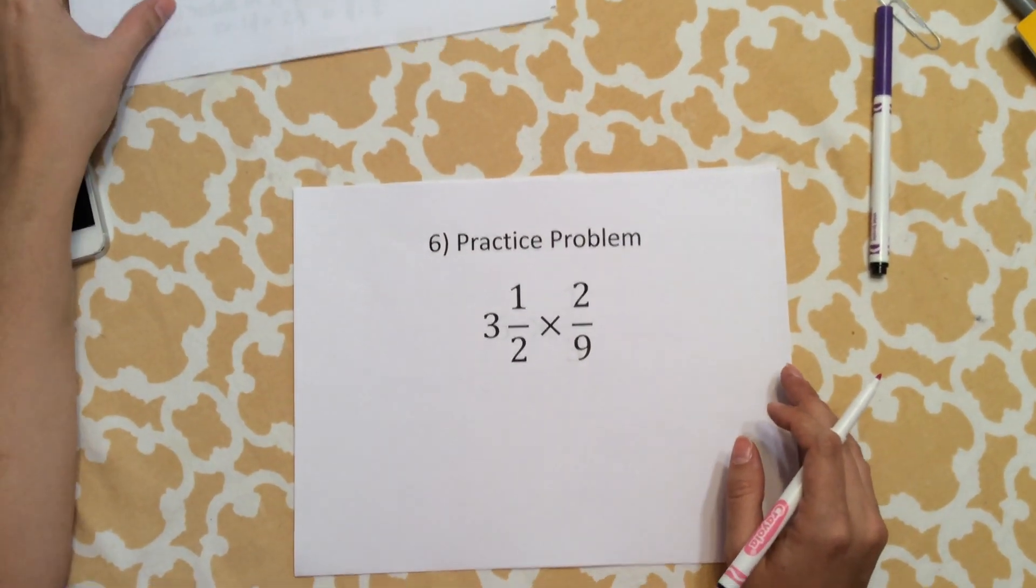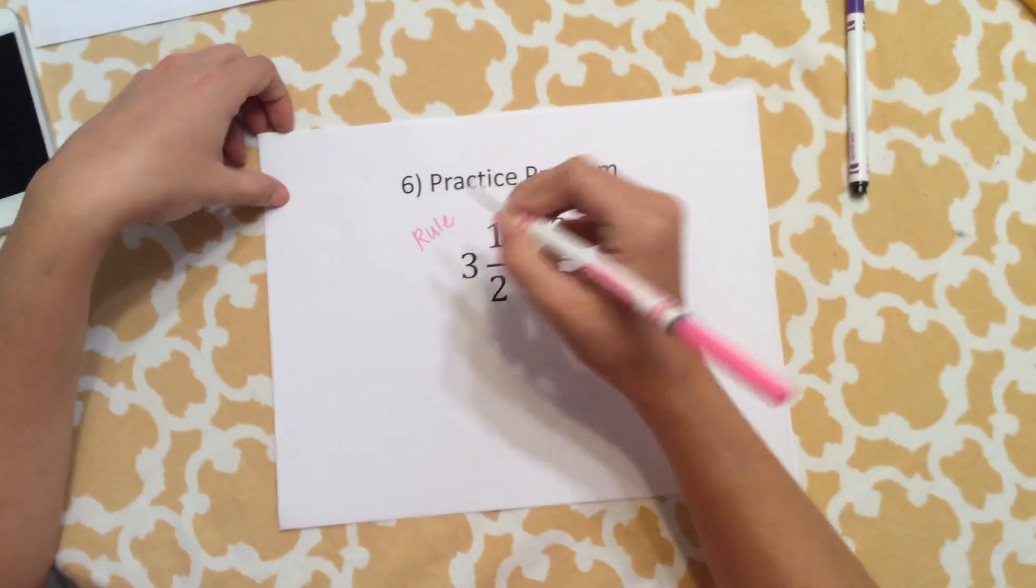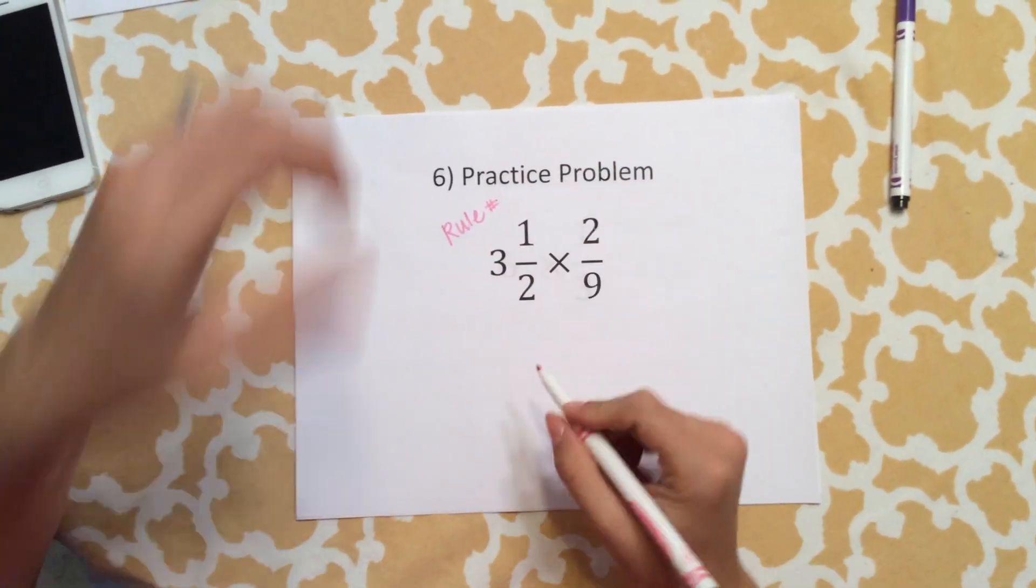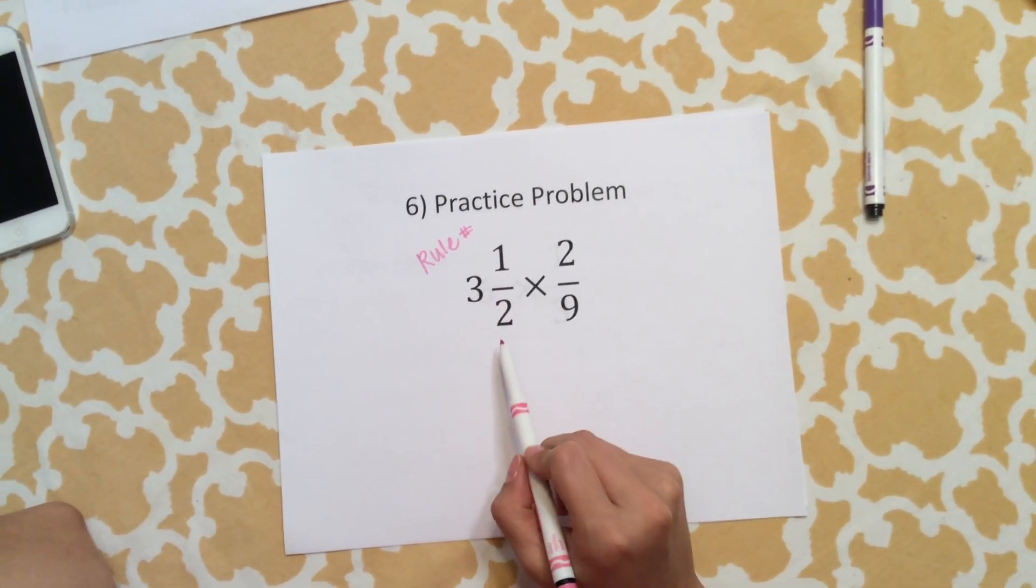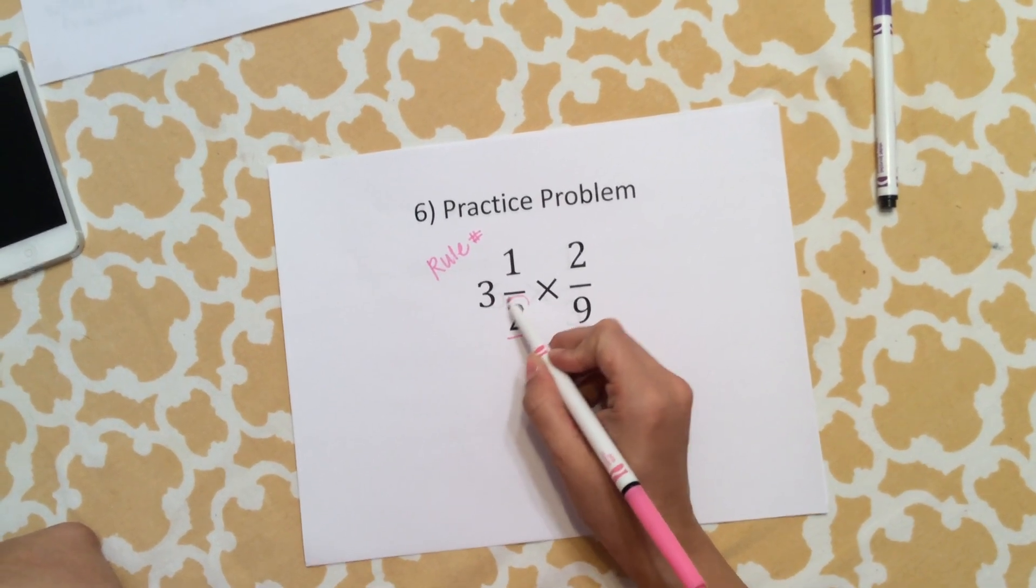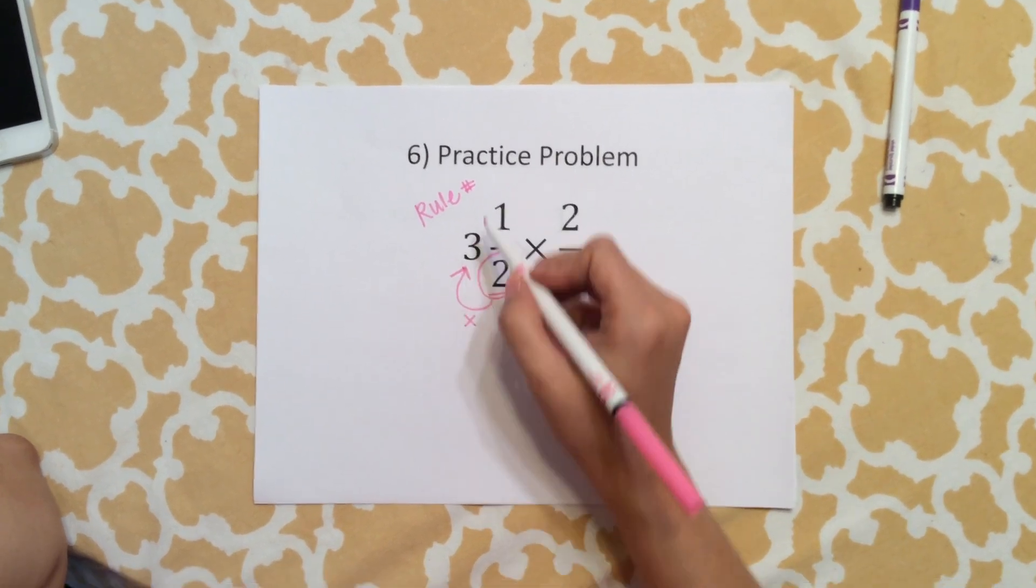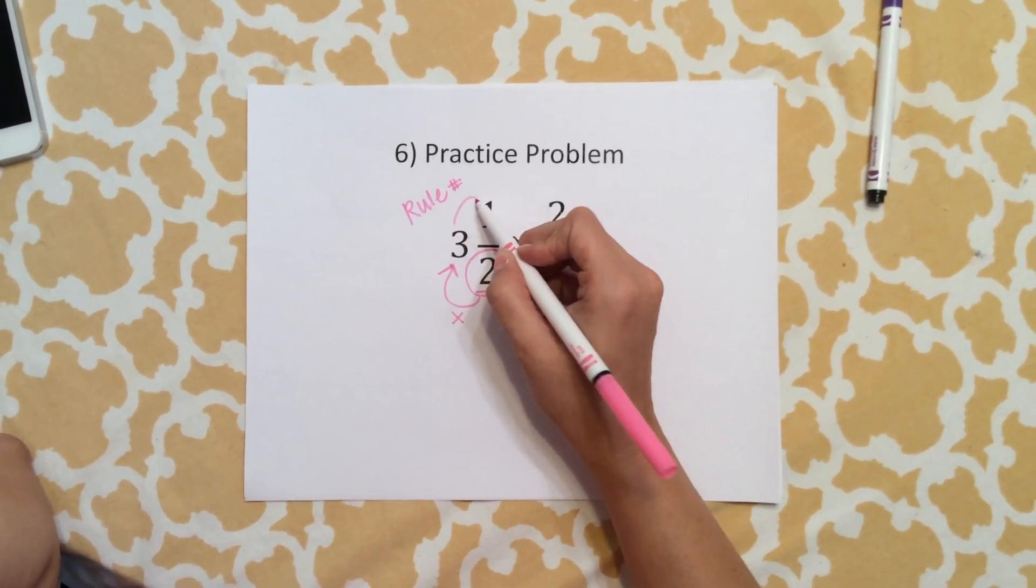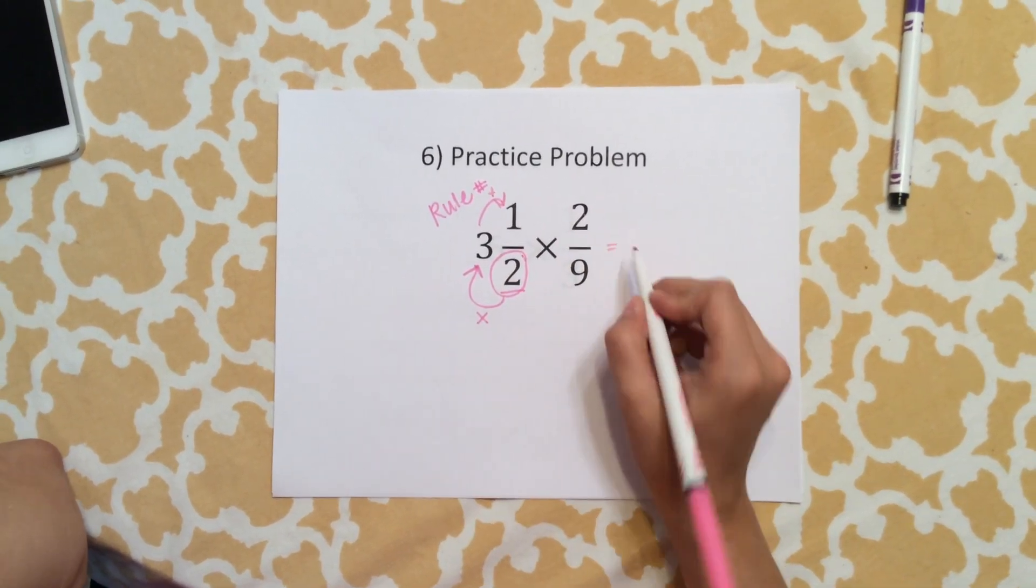Practice problem number two: which rule does this follow? So I want you to write the rule. Also remember what we learned in class today—we're not going to multiply a mixed number, we're going to change it to an improper. Remember how you change: multiply the denominator times the whole number, then get that answer, the product, and add to the numerator and multiply straight across.